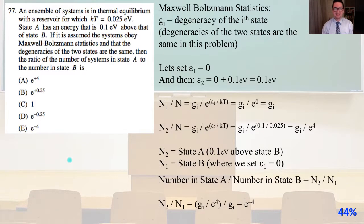Number 77, an ensemble of systems is in thermal equilibrium with a reservoir for which KT equals 0.025 EV. State A has an energy that is 0.1 EV above that of state B. If it is assumed the systems obey Maxwell-Boltzmann statistics and that the degeneracies of the two states are the same, then the ratio of the number of systems in state A to the number in state B is. Well, Maxwell-Boltzmann statistics, we have g of i equals the degeneracy of the i-th state. And in this problem, it was given that the degeneracies of the two states are the same. So let's set the energy of the first state equal to 0, and then the energy of the second state would be 0 plus 0.1 EV, and that's going to equal 0.1 EV.